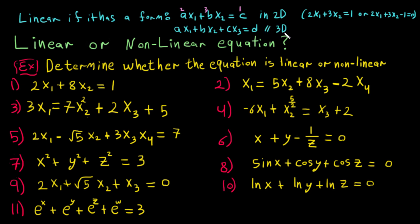And if we have an extra variable, for example plus dx4, then it will be four dimensions, and so on. Here you can see that all variables are separate — there is no two variables multiplied by each other.